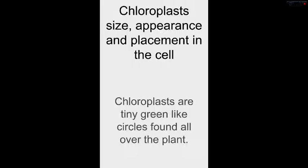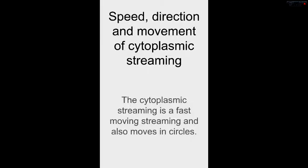The chloroplast size, appearance, and placement in the cell: chloroplasts are tiny green-like circles found all over the plant.